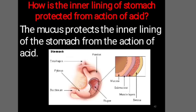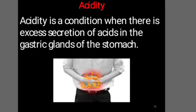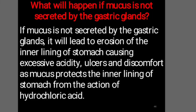The function of hydrochloric acid is to make an acidic medium inside the stomach, which is necessary for the action of gastric enzymes like pepsin. Hydrochloric acid also kills most harmful bacteria. Will hydrochloric acid burn the stomach? Definitely no — mucus protects the inner lining of the stomach from the action of acid. However, if acidic secretions are excess, acidity results. If mucus is not secreted by the gastric glands, it will lead to erosion of the inner lining of the stomach, causing excessive acidity and discomfort.